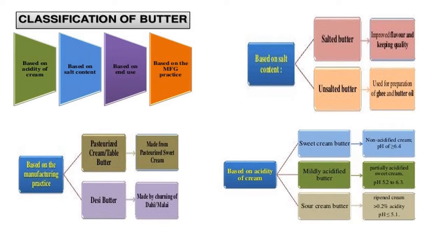Classification based on acidity of cream: sweet cream butter, which is not acidified at all; mildly acidified butter, where partially acidified sweet cream is used with pH 5.2 to 6.3; and sour cream butter, which is ripened with acidity of 0.2% or pH 5.1.